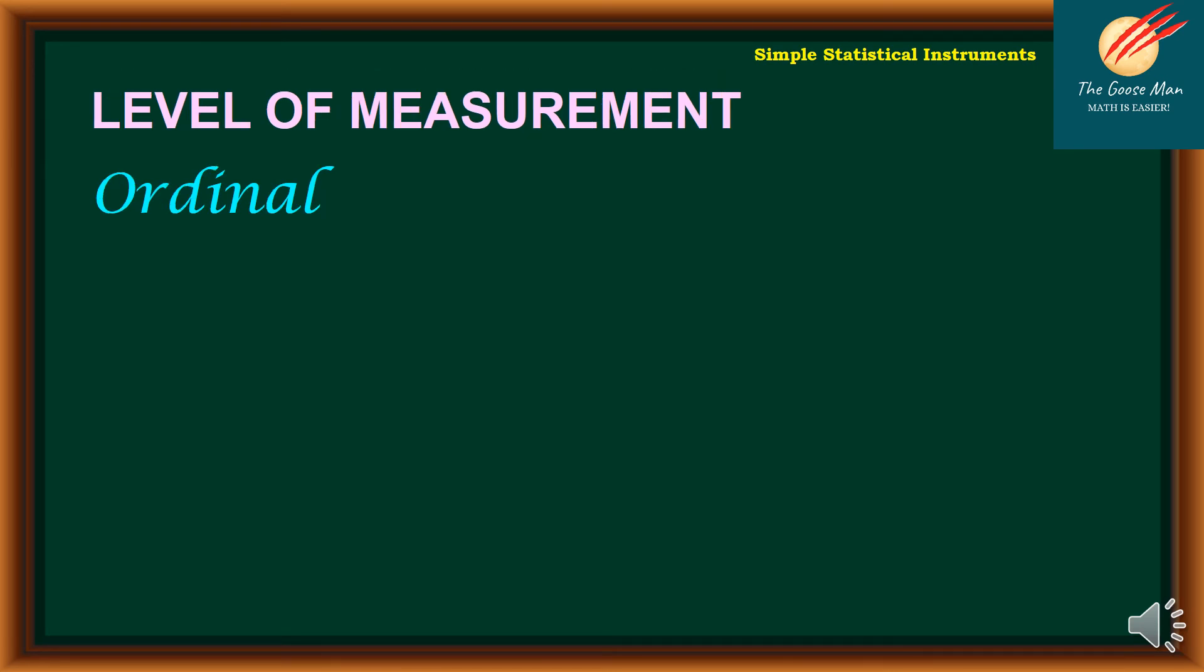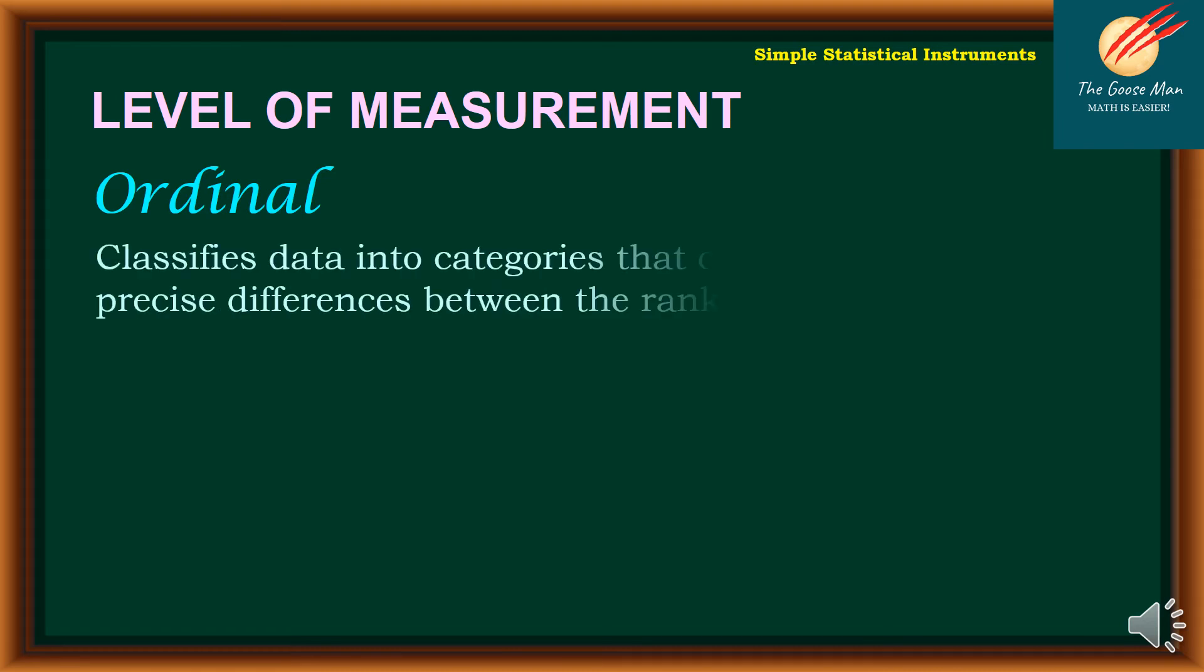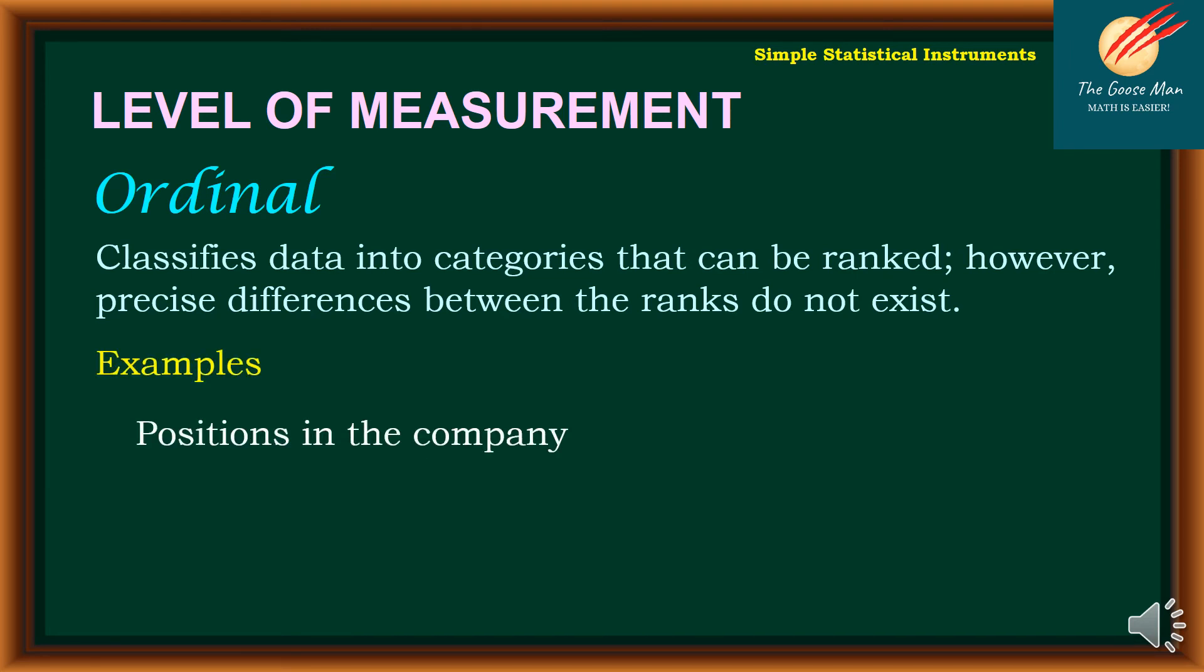On the other hand, if we will talk about the ordinal, that is the second level of measurement. Ordinal meaning to say that classifies data into categories that can be ranked. However, precise differences between the ranks do not exist. Examples are positions in the company and the other one is the difficulty of an exam. Also, another example is the socioeconomic status. We can classify as the poor, average, as well as the rich. But there is no precise difference between the ranks of middle income, rich, and poor. Another example is the rank in contest. Although you landed first, we cannot precisely determine the difference between the first and the second placer in the contest.